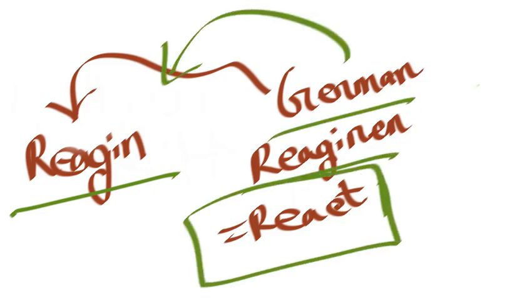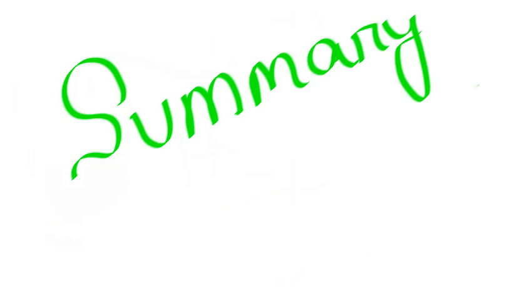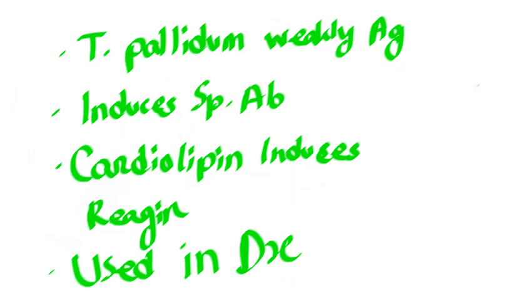To put it in a nutshell: Treponema is only weakly antigenic, but the antigens of Treponema pallidum induce specific antibodies. They also induce nonspecific antibodies, i.e., Reagin, which can be detected by the flocculation of lipid, i.e., Cardiolipin extracted from beef heart. Both specific antitreponemal antibody and nonspecific Reagin are used in the serological diagnosis of syphilis.